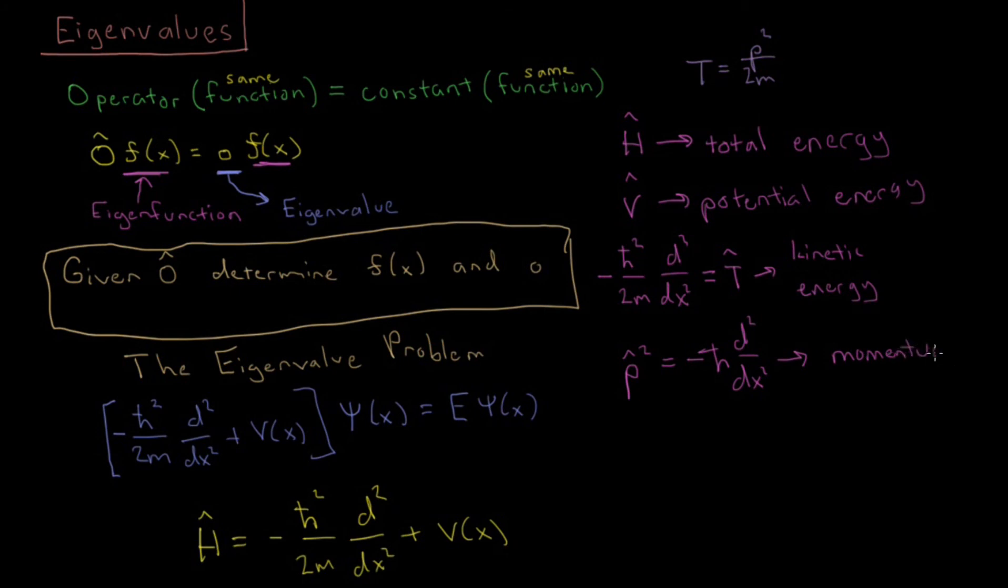And again, that just came from looking at what we know is true about kinetic energy and looking at the form of the Hamiltonian. Then, taking the square root of this, we can see that momentum itself, the operator P, equals whatever is the square root of this.